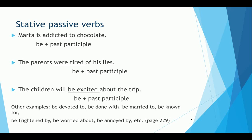Examples of stative passive: 'Marta is addicted to chocolate.' 'The parents were tired of his lies.' 'The children will be excited about the trip.' Other examples include: be devoted to, be done with, be married to, be known for, be frightened by, be worried about, be annoyed by, etc. You have a complete list in your book.